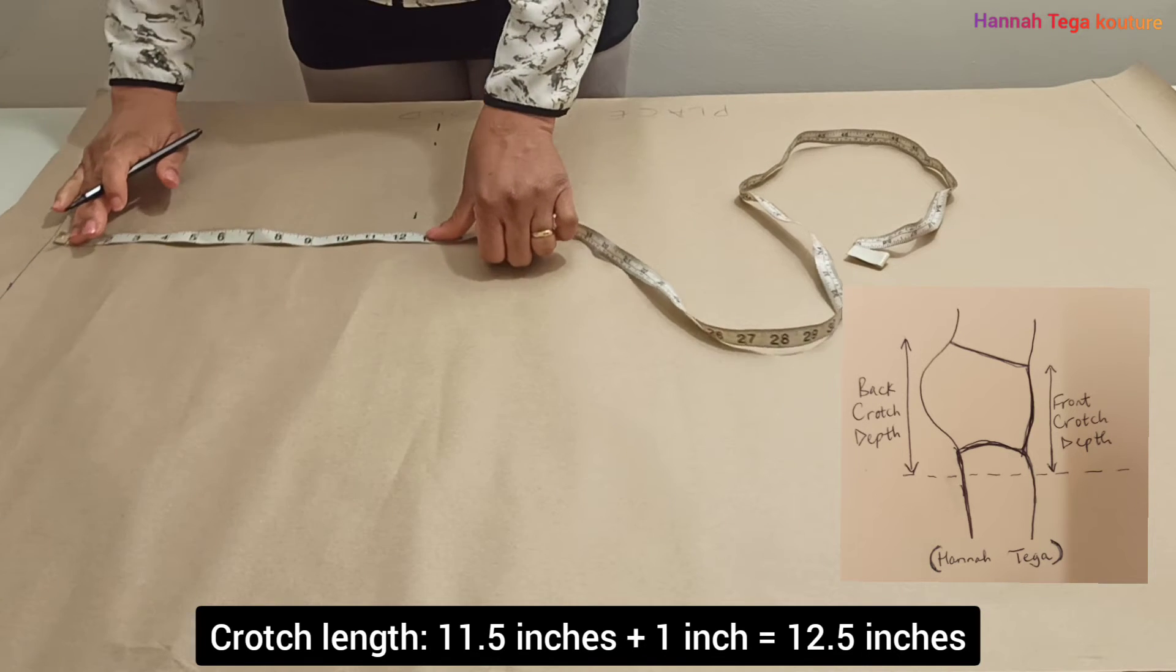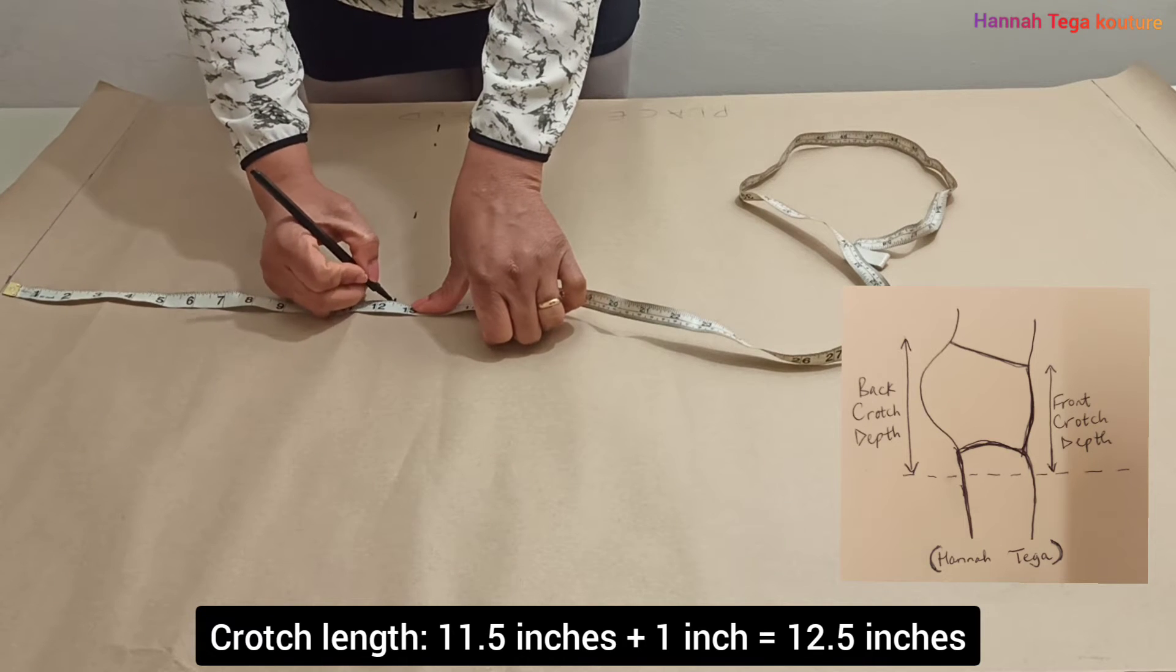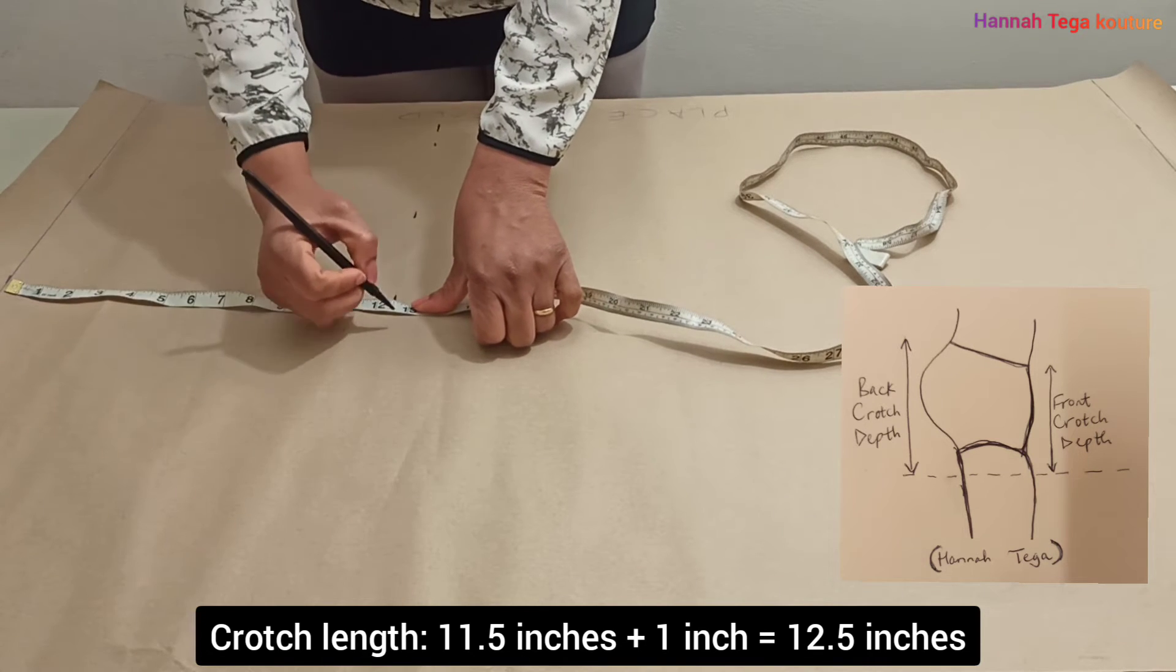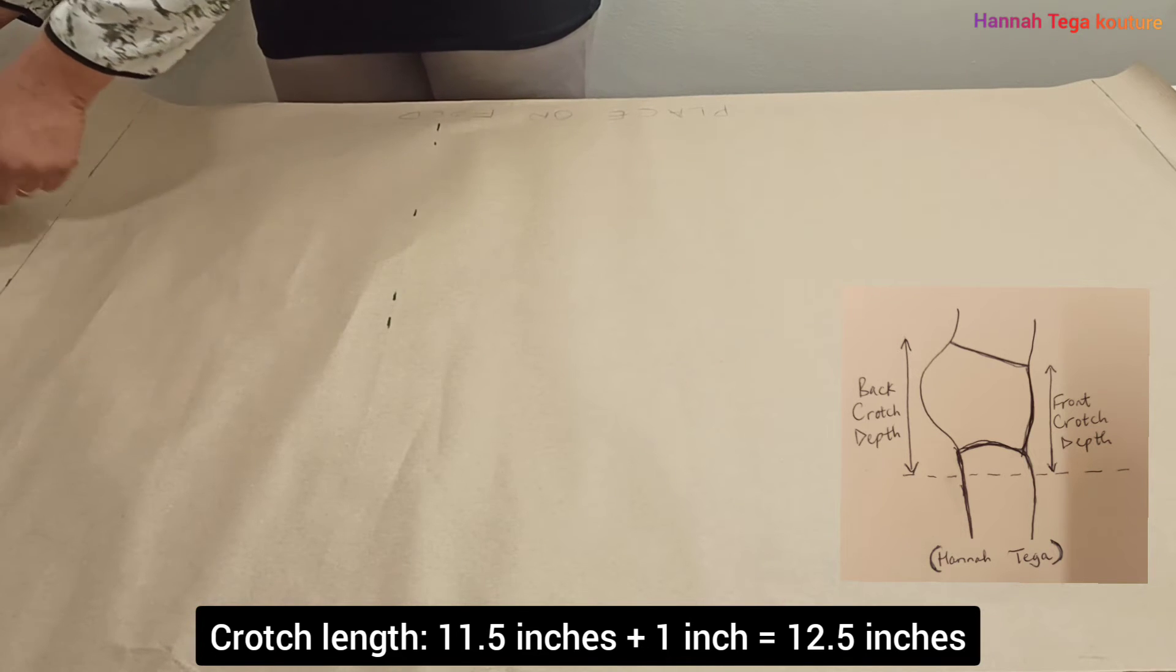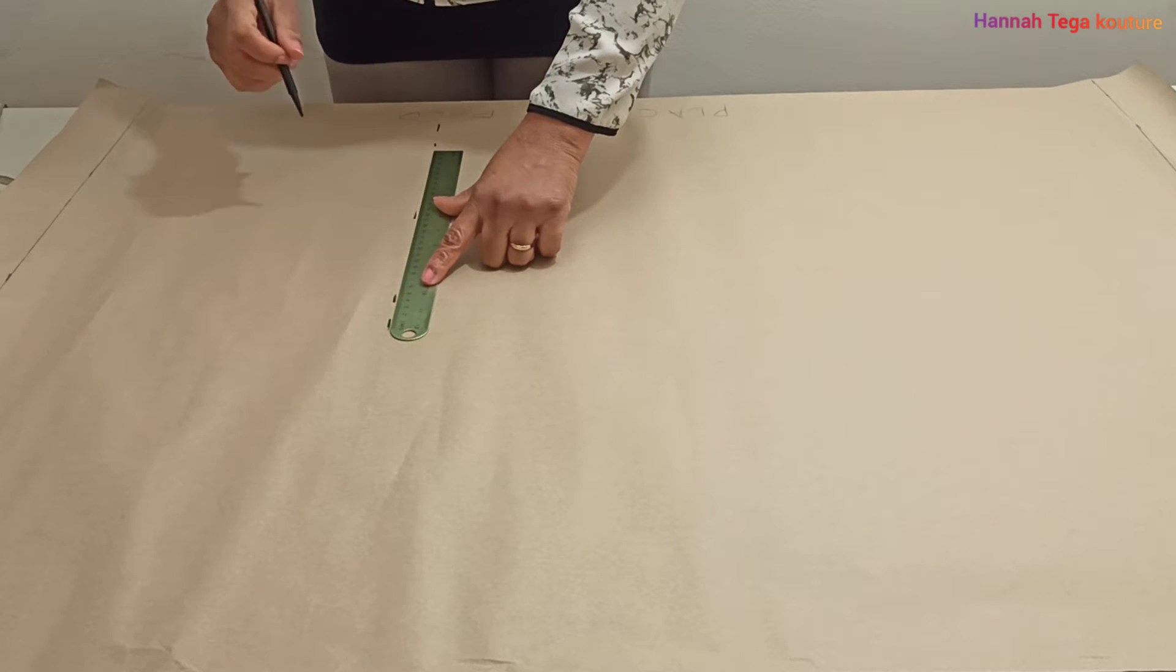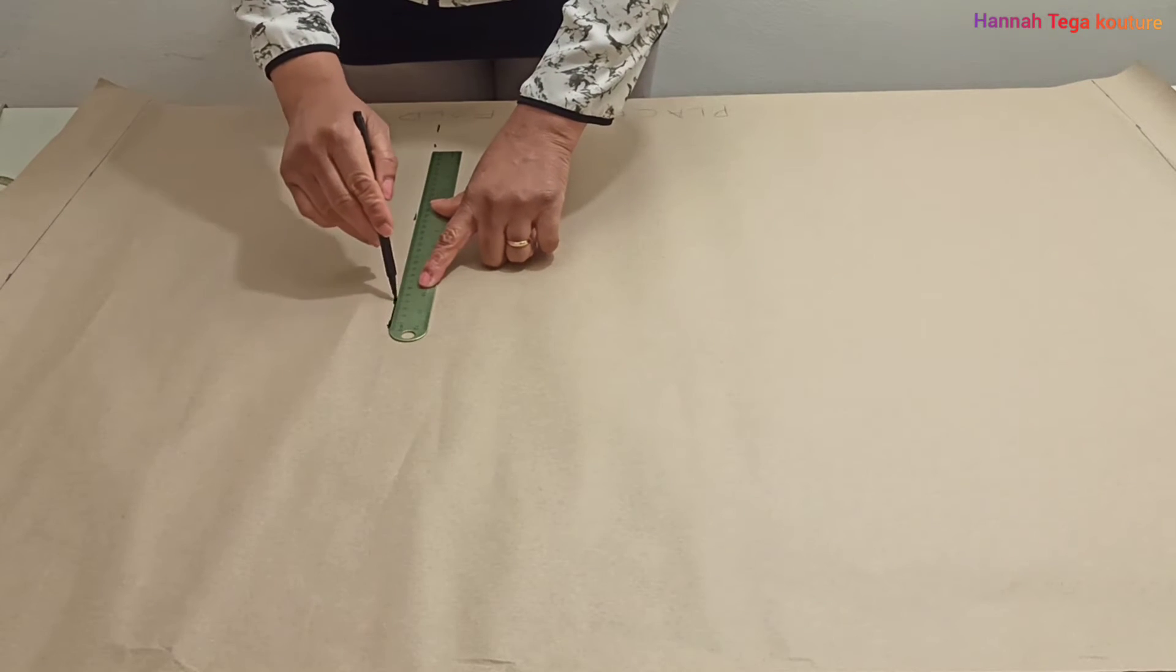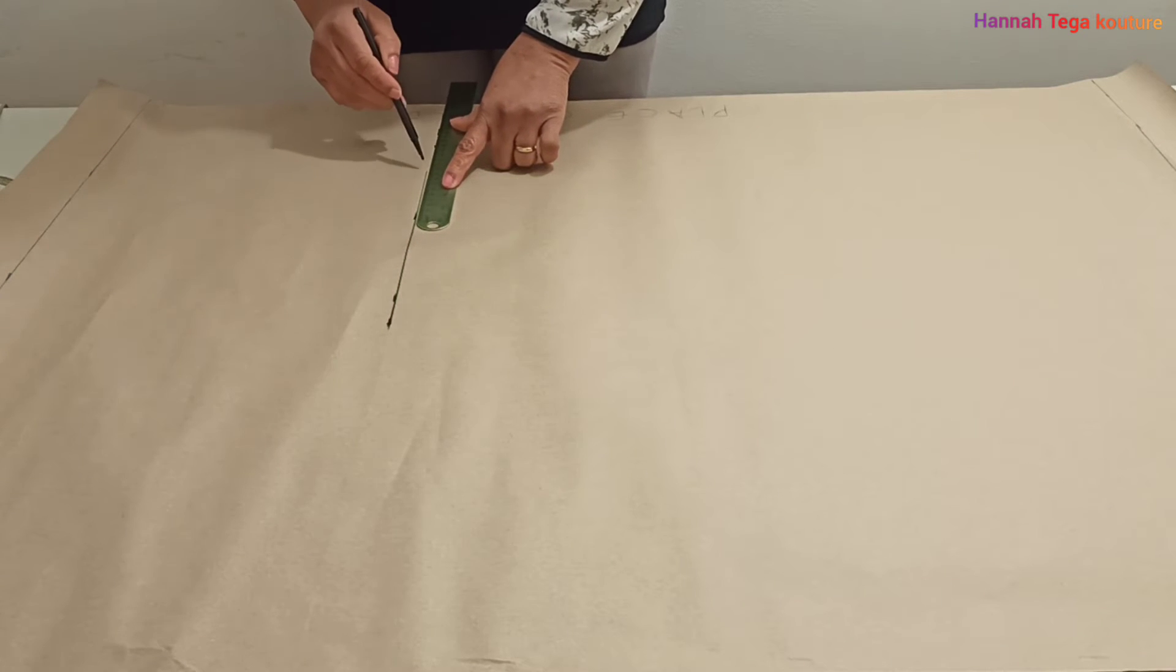Whatever your crotch measurement is, make sure you add one inch to it. For example, if you've got nine inches as your crotch measurement, add one inch to it to make 10 and make the marking. Because this is a free pant, it's not a tight pant, you want it as free as possible. So rule a line like I'm doing.